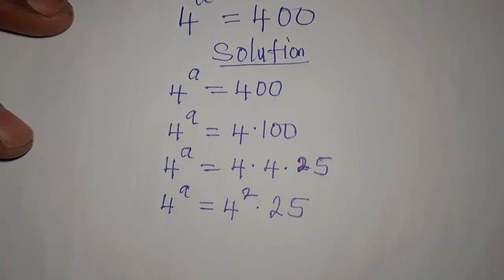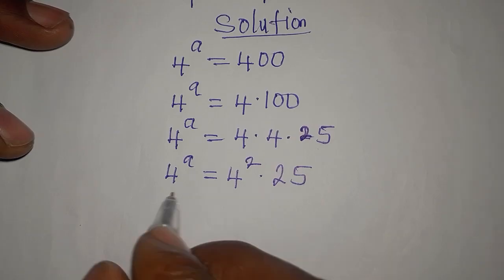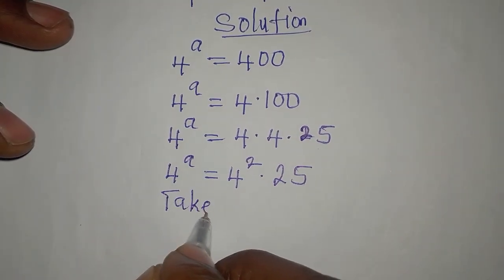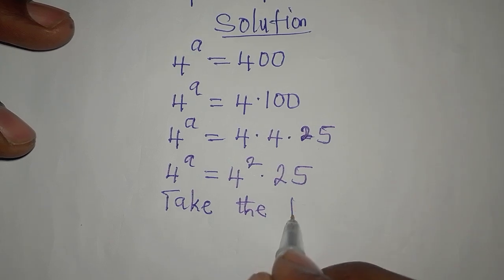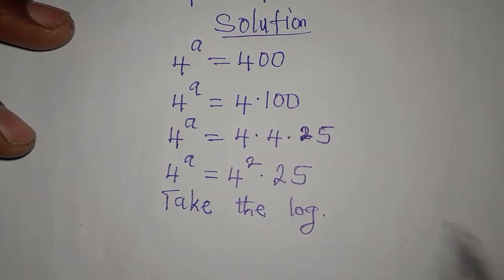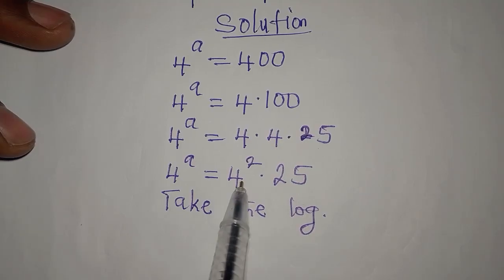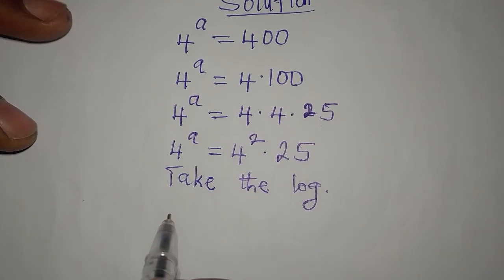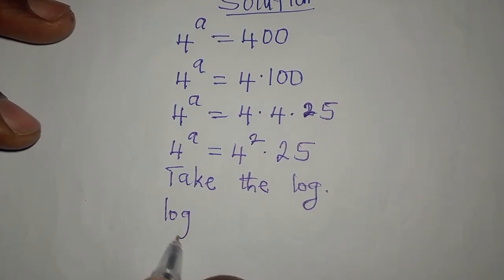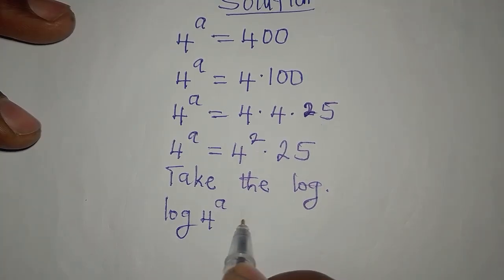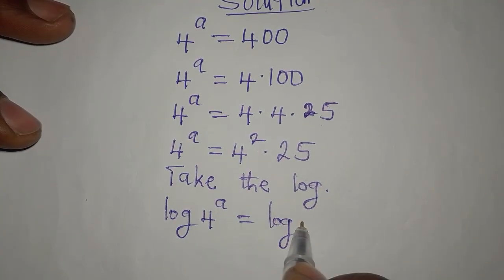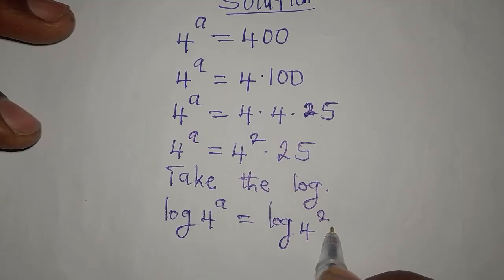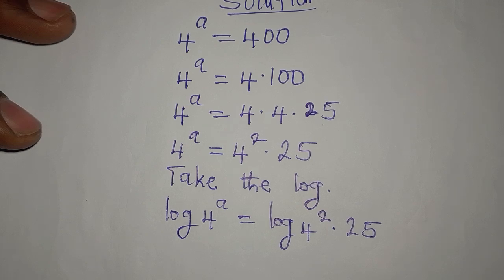This is the point where we take the log of both sides. We are taking the log of both sides because we cannot equate the bases on the left and on the right. So we have log of 4 to the power of a being equal to log of 4 squared multiplied by 25.